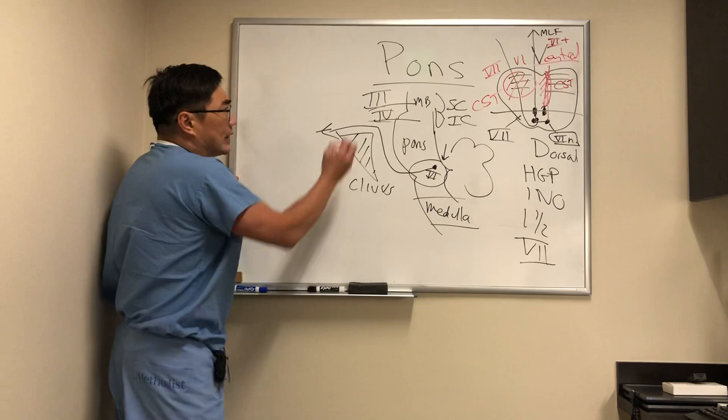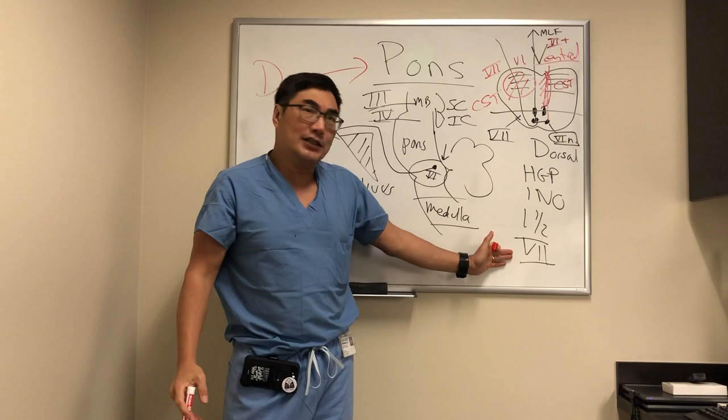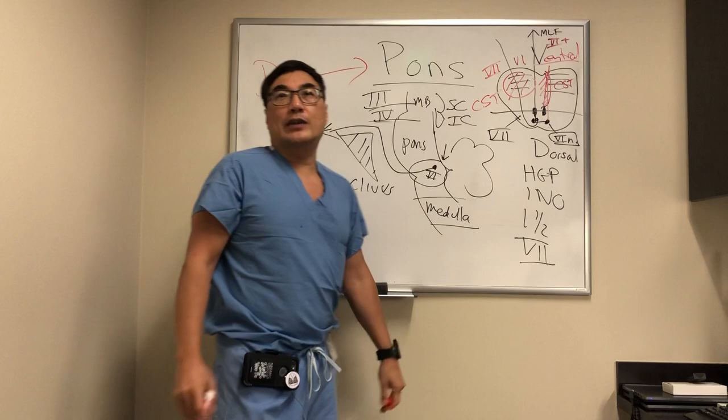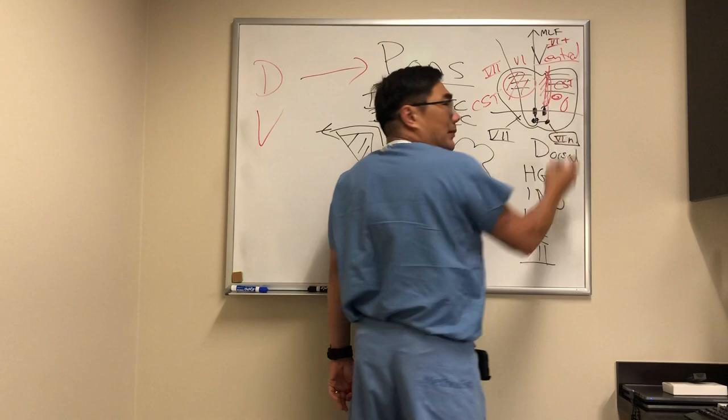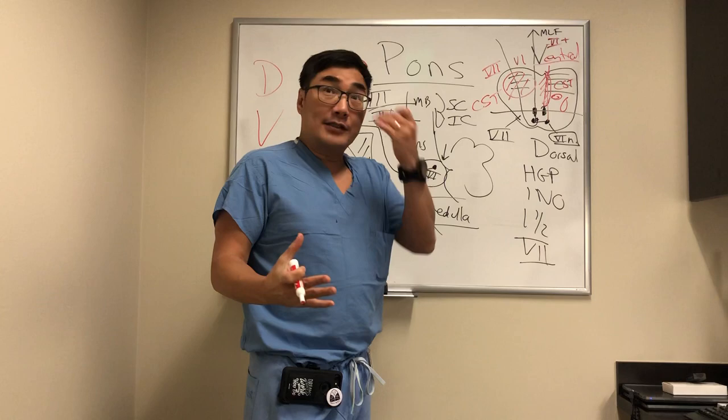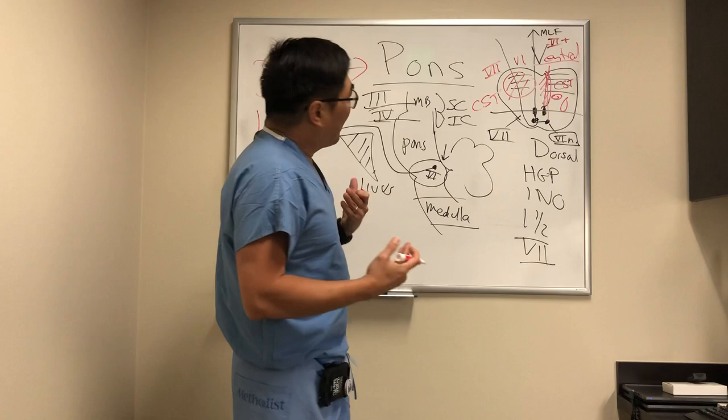So, to summarize: the dorsal pontine syndromes are straightforward — they come to us with ophthalmoplegia, horizontal gaze palsy, fascicular sixth, or one-and-a-half, with or without the seventh at the genu. The ventral pontine lesions are a little more difficult because they involve other structures — lemnisci — meaning patients may have hemisensory loss and ataxia from cerebellar afferent fibers.